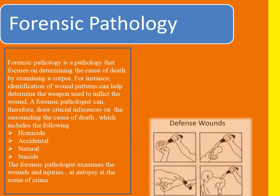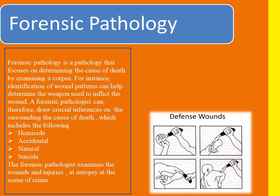Forensic Pathology focuses on determining the cause of death by examining a corpse, for example through wound patterns from a knife or a gun — meaning they can identify what weapon was used. Forensic Pathology can draw crucial inferences on the cause of death, which includes: homicide (one person killing another), accidental death caused during an accident, natural death occurring due to serious causes such as a heart attack, and suicide. The Forensic Pathologist examines wounds and injuries at autopsy and at the crime scene.